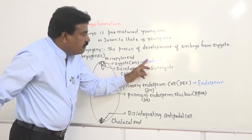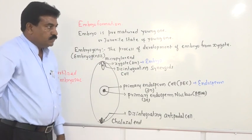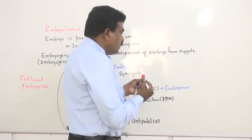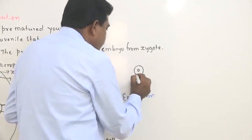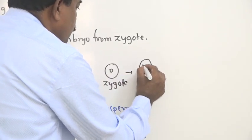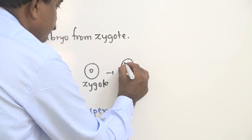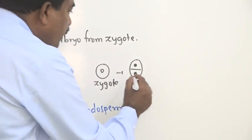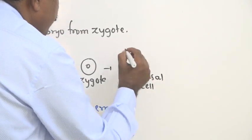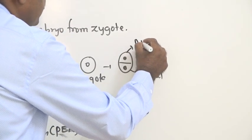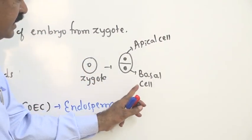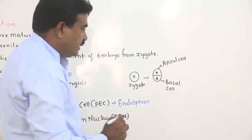During embryonic development, the first event is that the zygote, a diploid cell, undergoes mitosis, and as a result two cells are formed. One cell is the basal cell and the other is the apical cell.